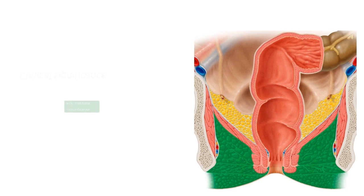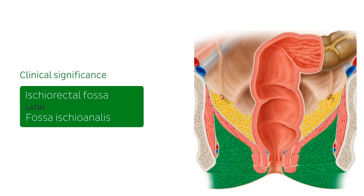Let's have a brief chat about the clinical significance of the ischiorectal fossa. Because communication between the two fossae is limited at certain points, if an infected abscess were to occur at or near the midline of one fossa, the contamination would not spread to the other. However, cross-contamination is possible via the retrosphincteric space of Courtney, also called the deep postnatal space, located above the anococcygeal ligament but below the levator ani. If infection spreads there, a so-called horseshoe abscess can occur.